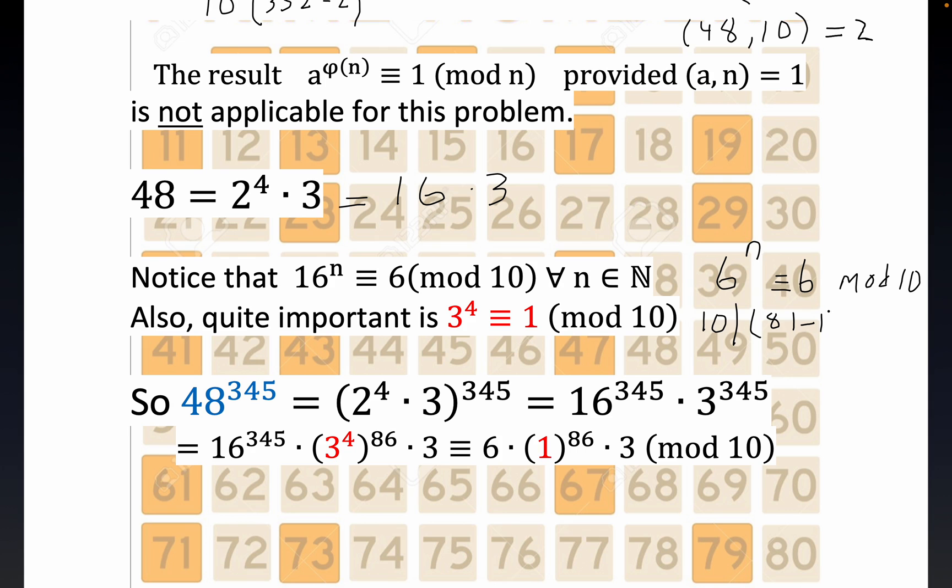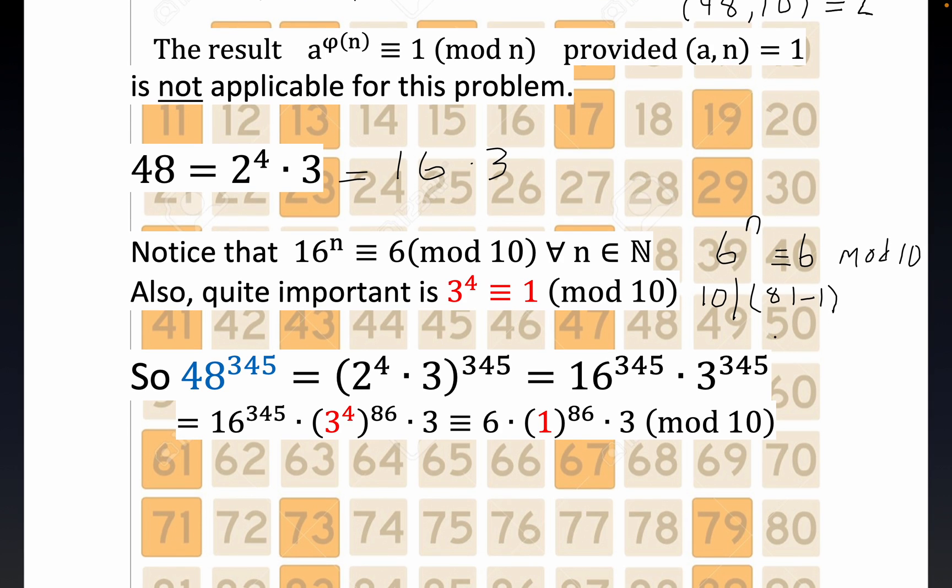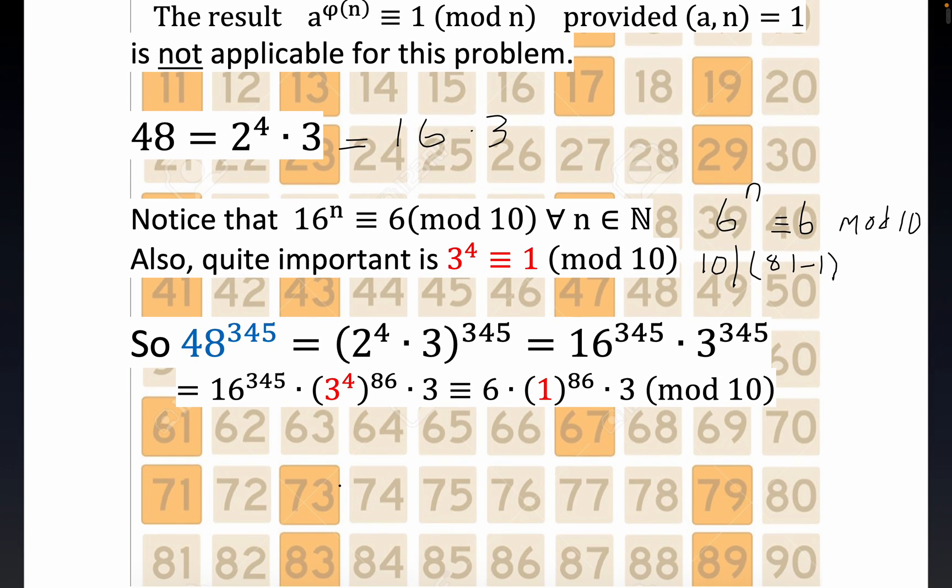Now, the rest of this is fairly routine. Our original number is 48 to the 345th, and this is all just very basic stuff - laws of exponents. The primary work we have to do is notice that 345, when you divide it by 4...